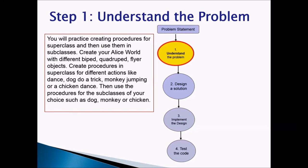You will practice creating procedures for the superclass and then use them in subclasses. Create your own Alice world with different biped, quadruped, or flyer objects. Create procedures in the superclass for different actions like dance, dog will do a trick, monkey jumping, or a chicken dance. Then use the procedures for the subclasses of your choice, such as dog, monkey, or chicken.